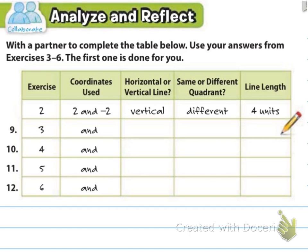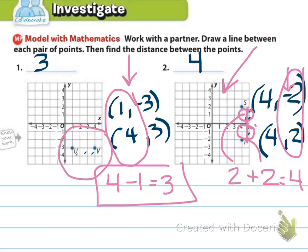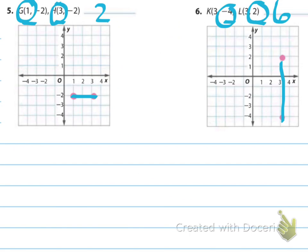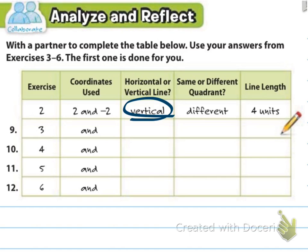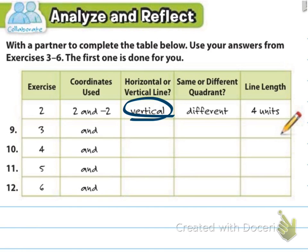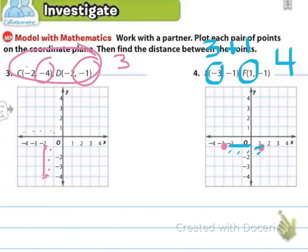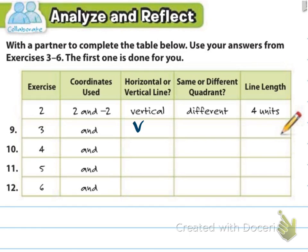Now we move to problems nine through twelve. Going back to exercise two, the line was vertical — that's up and down, as opposed to horizontal which is side to side. For that exercise the points were in different quadrants and the length was four units. For exercise three, it was a vertical line in the same quadrant and the distance was three units. Go ahead and pause the video to do problems four, five, and six, then compare your answers.